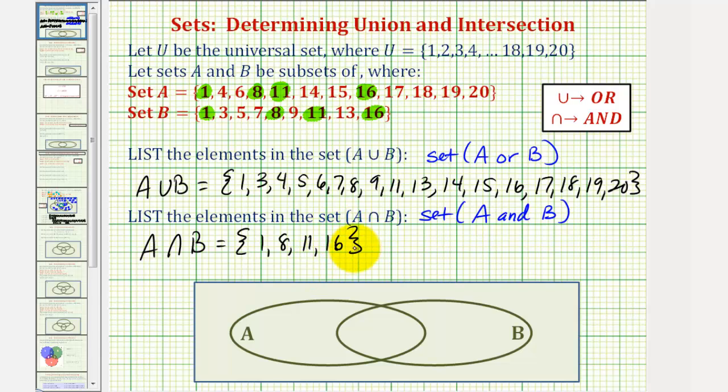So notice how if we can reason this out by analyzing our sets, it can be much faster than creating a Venn diagram each time. I hope you found this helpful.